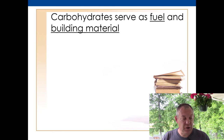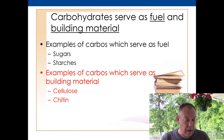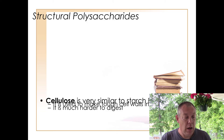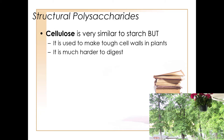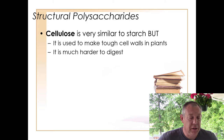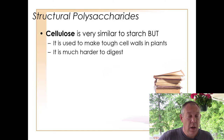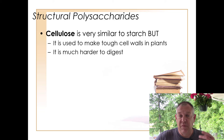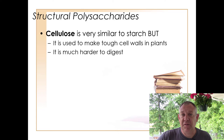Carbohydrates serve as fuel and building material. Now let's talk about structural carbohydrates — structural polysaccharides. The most common carbohydrate on Earth is probably cellulose. Cellulose is very similar to starch — plants make both. Plants store energy as starch but make their cell walls out of cellulose, which is a very tough, rugged carbohydrate. It does a good job of being structural but is much harder to digest.